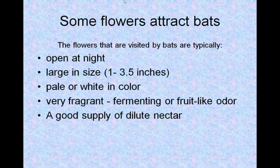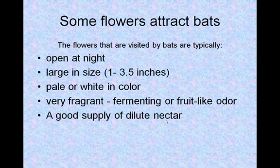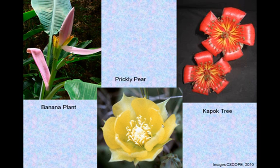Some flowers attract bats. The flowers that are visited by bats are typically open at night, large in size, pale or white in color, very fragrant, with a fermenting or fruit-like odor, and a good supply of dilute nectar. Here are some examples: the banana plant, the prickly pear, and the kapok tree flower.